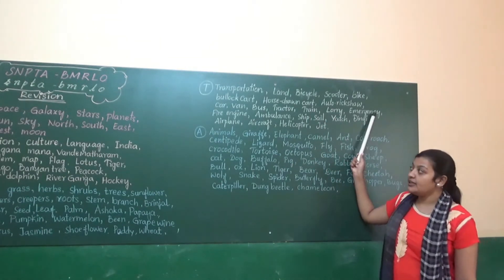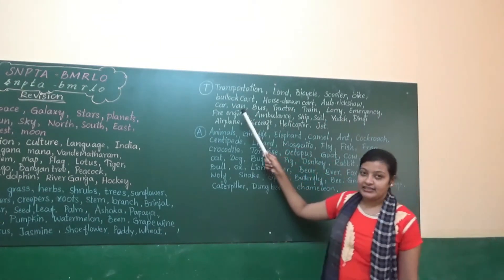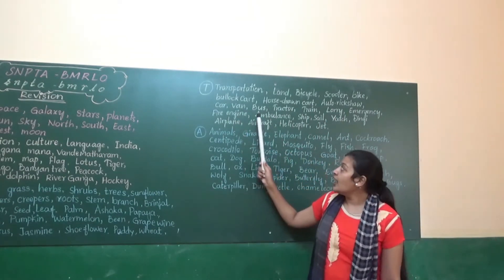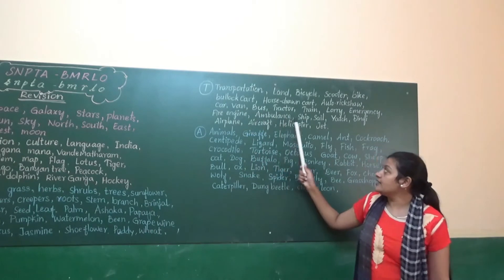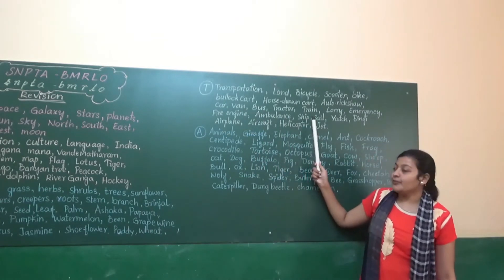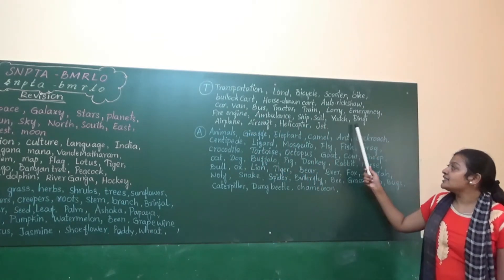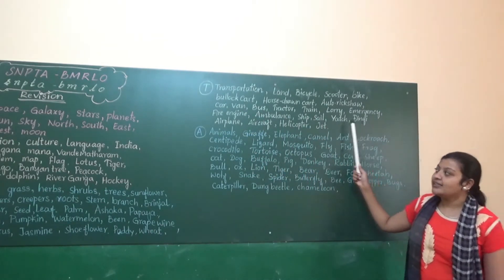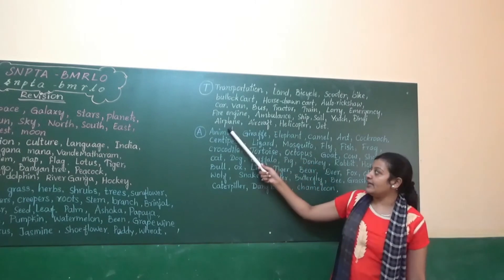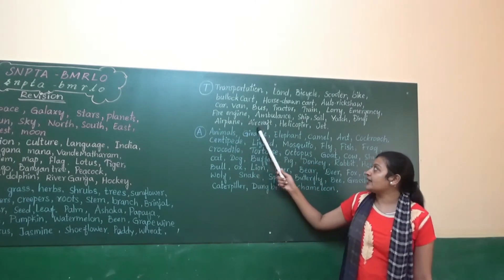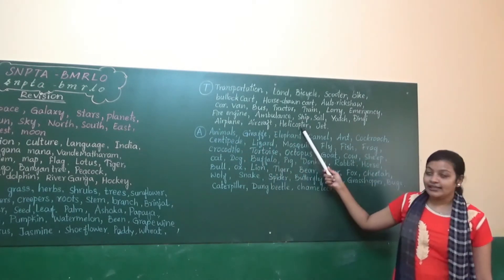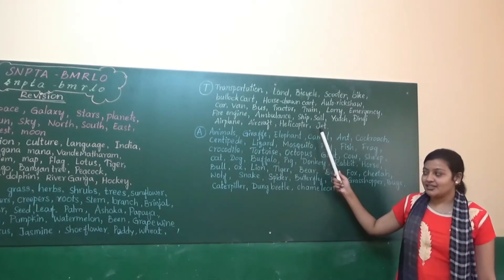Emergency vehicles: fire engine, ambulance. Water: ship, sail, yacht, dinghy. Air: aeroplane, airflap, helicopter, jet.